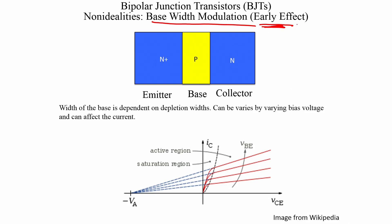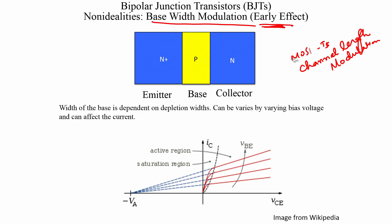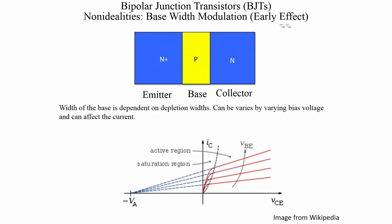The second non-ideality is base width modulation, which is quite important from the circuits point of view. It is also called the Early effect, named after the person who discovered it. This effect has a counterpart in MOSFETs called channel length modulation. Both effects describe a phenomenon where the collector current becomes dependent on the collector-emitter voltage, which reduces the output impedance of the device and impacts amplifier gain.